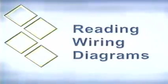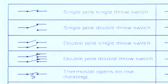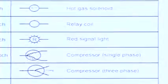Wiring diagrams can usually be found attached to one of the service panels and can be schematic, pictorial, or a combination of both. Symbols used in wiring diagrams vary somewhat from system to system, and a technician should be aware of these differences.